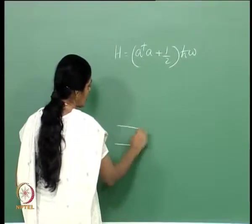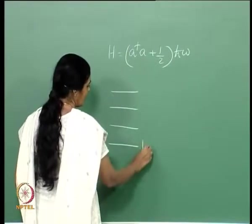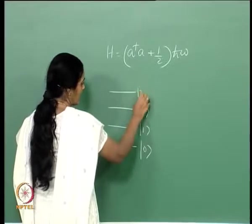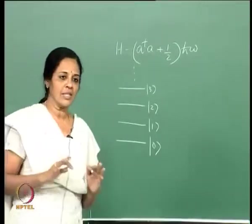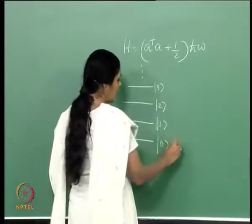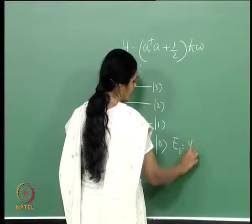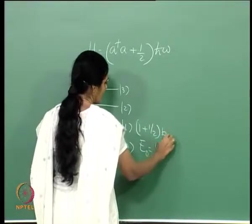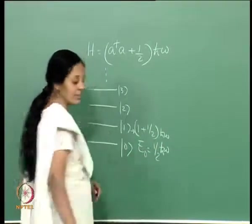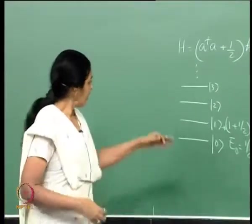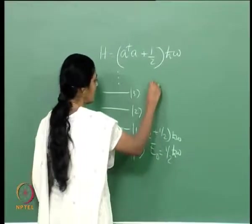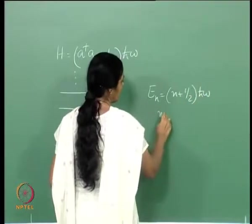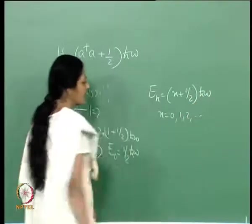The energy levels of the oscillator were equally spaced. The notation used: the ground state was ket 0, the first excited state was ket 1, and so on — that is an infinite set of energy levels. The energy itself was given by E_0 = half h-bar omega, which is a zero-point energy. Then E_1 = (1 + half) h-bar omega, and in general E_n = (n + half) h-bar omega, n taking values 0, 1, 2, 3.